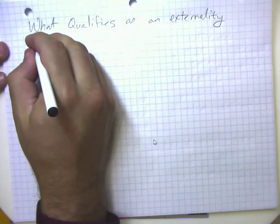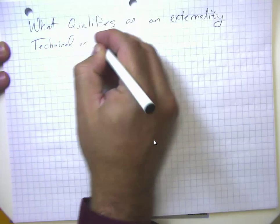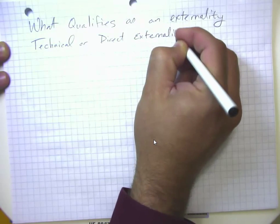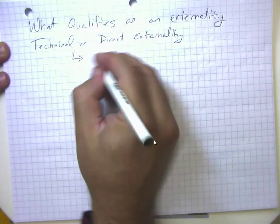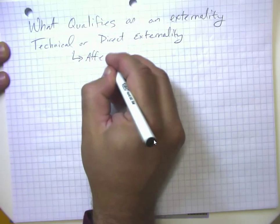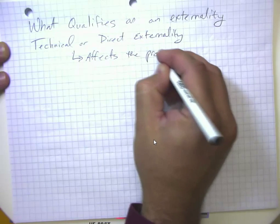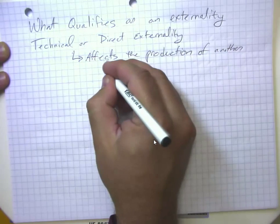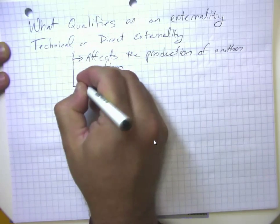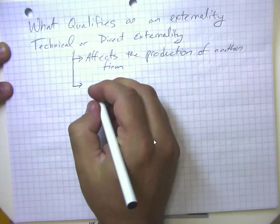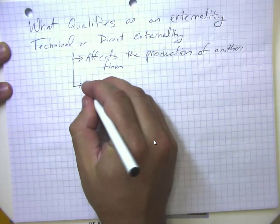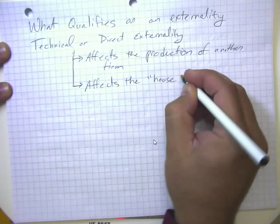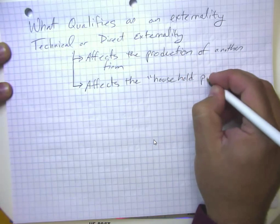The first category would be what we call a technical or direct externality. And a technical or direct externality affects the production function of another firm, or if we really dug into how economists look at this in a more advanced treatment, affects what we call the household production function of a household. Let me talk about each of these after I finish my writing.